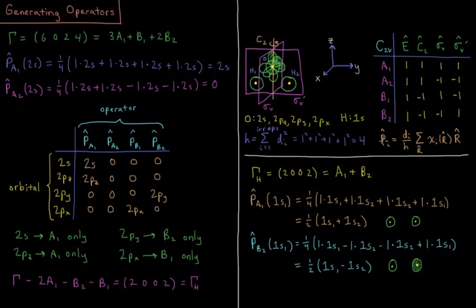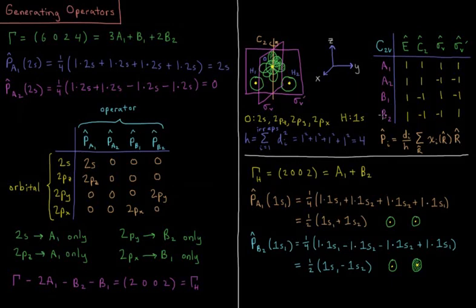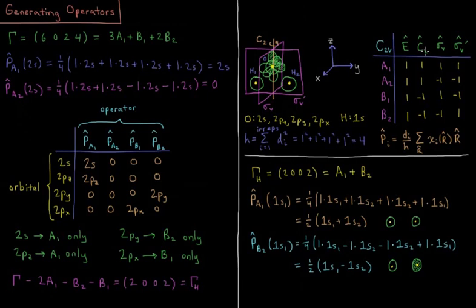To do a projection operator, we look at the given EREP of interest and its dimensionality, which is its character under the identity. In C2V, every EREP is one-dimensional — A's and B's are one-dimensional, E's are two, T's are three. We divide by the order of the group, which is the sum of all symmetry elements, or the sum of squares of dimensionality of all EREPs. In C2V that's 1+1+1+1 = 4, so the order of C2V is 4 and we have a one-fourth prefix for all generating operators.